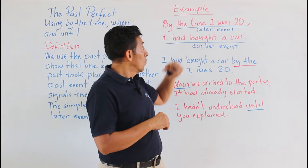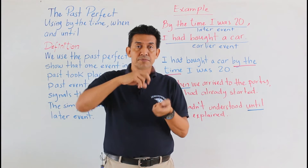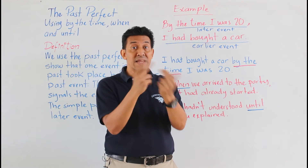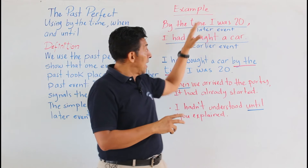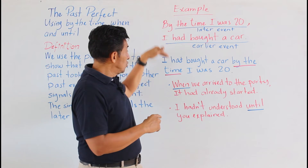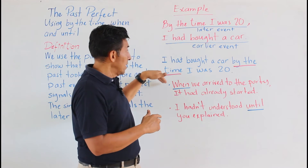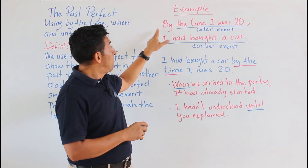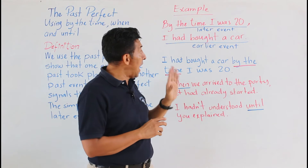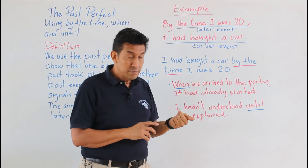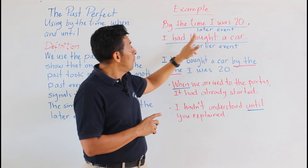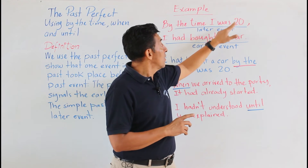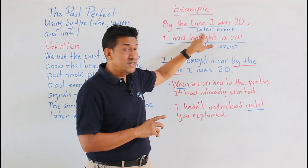In order for the later event to happen, we first need an earlier event. You can also switch the two ideas, like in these two examples. Let's read the sentence: 'By the time I was twenty, I had bought a car.' By the time I was twenty — so what happened is that you first bought a car and then you turned twenty.